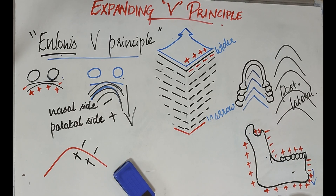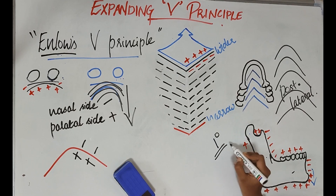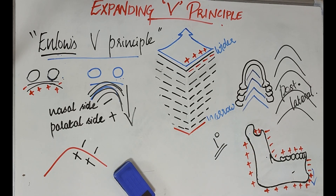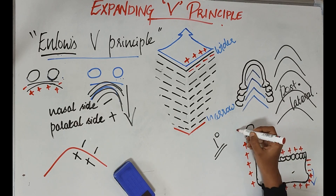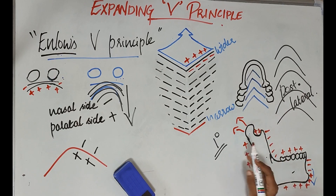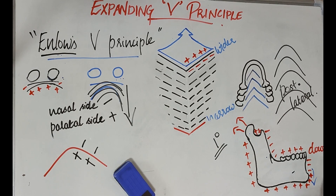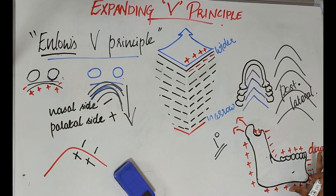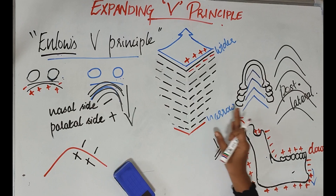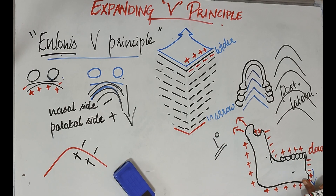This diagram was also seen in drift and displacement in orthodontics, specifically in primary displacement discussed in previous videos. In primary displacement, as the condyle grows upward and backward to maintain contact with the fossa, there is displacement of the mandible in a downward direction. This is seen here with bone deposition on the inner aspect, resorption on the outer aspect, and the condyle growing upward and backward while the mandible is displaced downward.